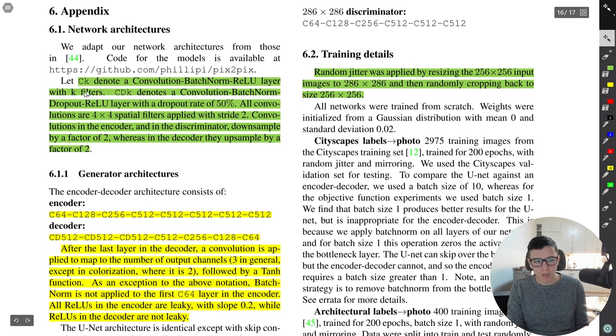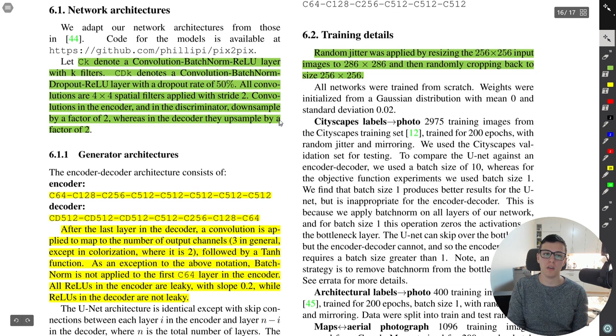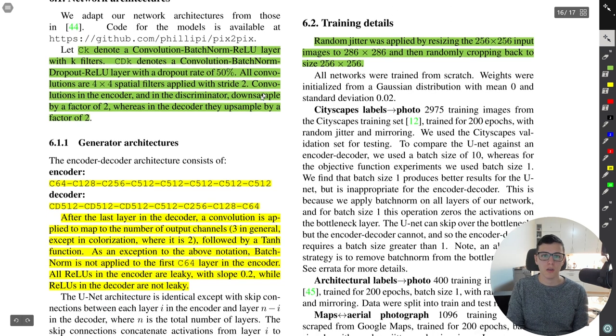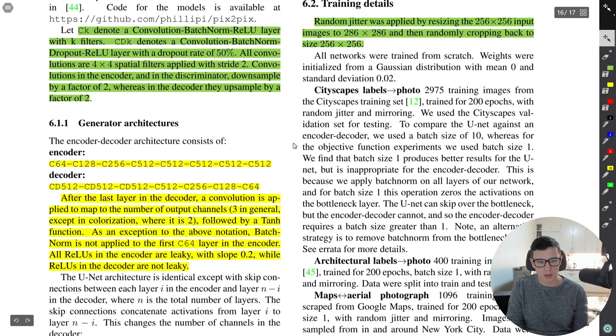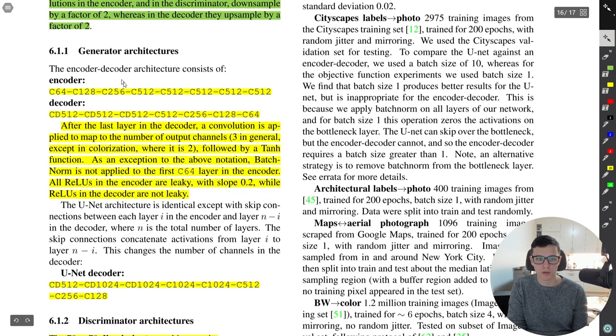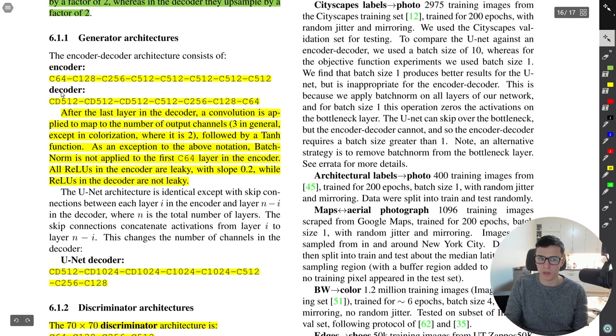So basically they used a conv batch norm ReLU with K filters and they denoted that CK and then CDK is a conv batch norm dropout ReLU and then all the conv layers are 4x4 kernels with a stride of 2. So basically the convolutions in the encoder the downward part of the UNet is going to be with a stride of 2 and also in the discriminator they downsample but in the decoder the upsample by a factor of 2 which sort of makes sense and yeah so this is the generator architecture.